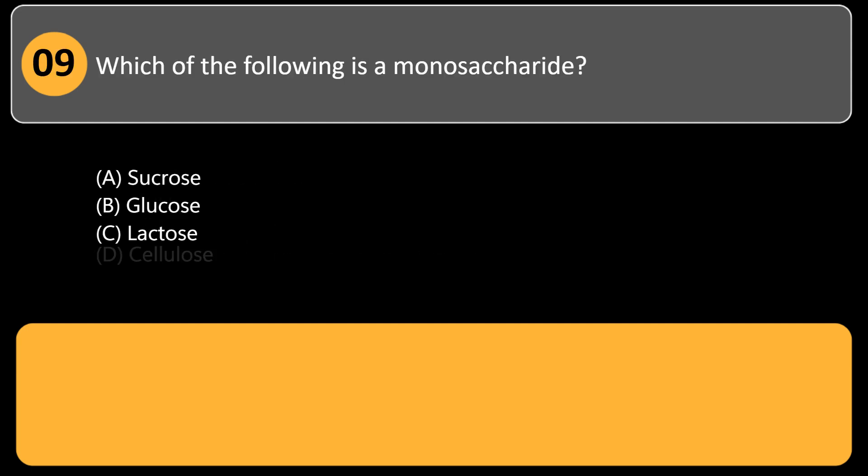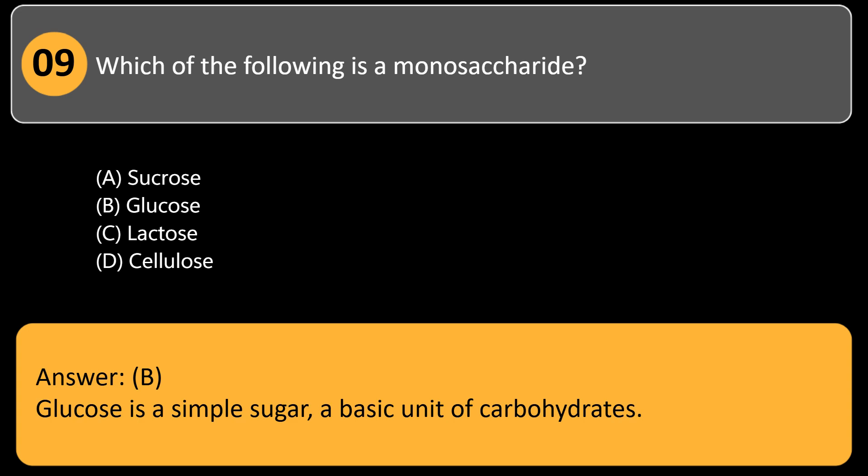Which of the following is a monosaccharide? A. Sucrose, B. Glucose, C. Lactose, D. Cellulose. Answer: B. Glucose is a simple sugar, a basic unit of carbohydrates.